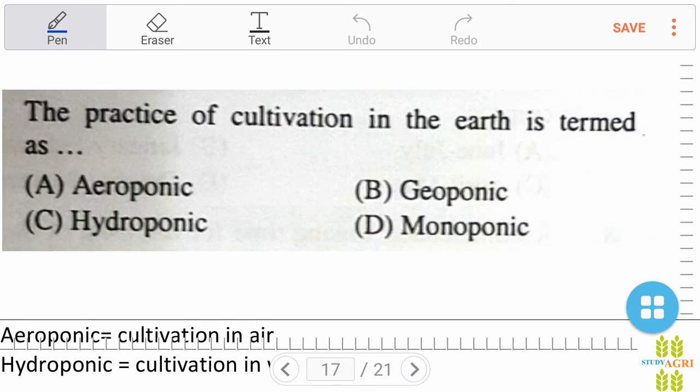The practice of cultivation in the earth is termed as? Remember these words and read carefully this question. If it is given earth, then the answer is geoponic. If it is given air, then the answer is aeroponic. If it is given water, then the answer is hydroponic.